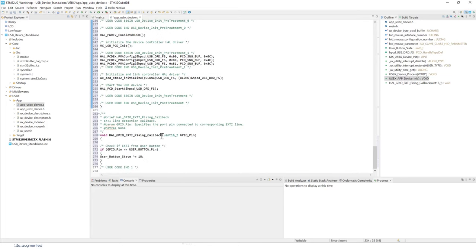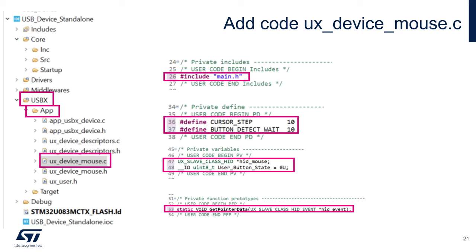Add the last two functions — 'USBX_App_Device_Init' and the EXTI callback for the user button. We are done with 'app_usbx_device.c'. The descriptor file will be kept as-is. The next file to edit is 'ux_device_mouse.c'.